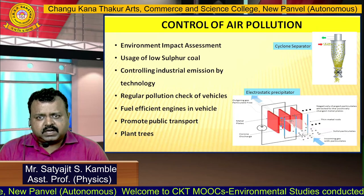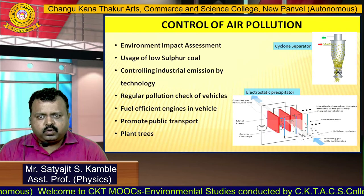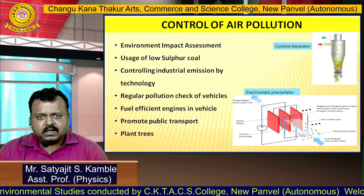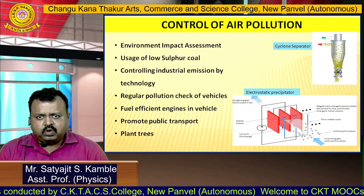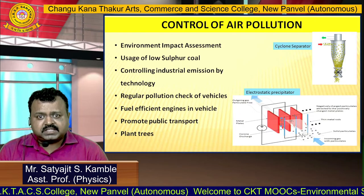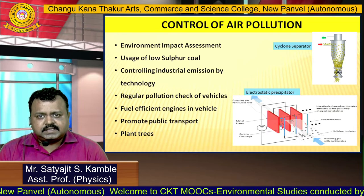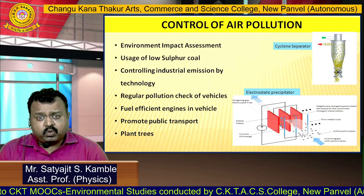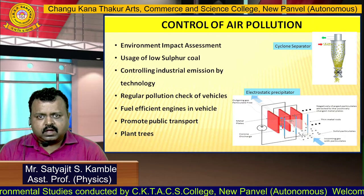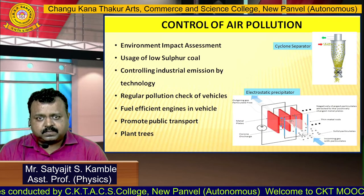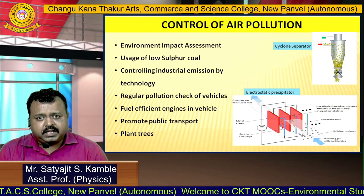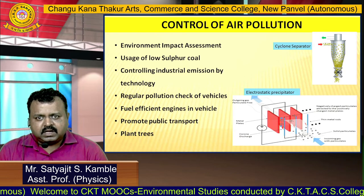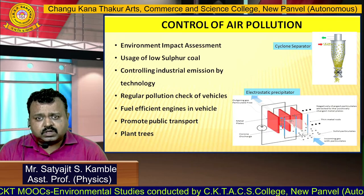We can control air pollution to a certain extent by following these measures. First, we need to do an Environmental Impact Assessment — it is the method by which we analyze the impact of a possible project, like an industry or mining, on the environment. Before any project is given approval, they are all screened on the grounds of environment. Second, since coal releases a high amount of fly ash, we try to use low-sulfur coal. We can also control industrial pollution using technology — for example, a cyclone separator, where dirty air is rotated at very high speed so heavy particles like dust settle at the bottom and clean air is collected from the other side. We can also use an electrostatic precipitator, where dirty air is passed in and dust particles get attracted to electrically charged rods, after which pure air is collected from the other end.